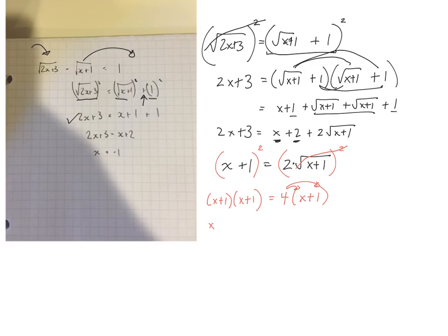All right, so left side, we'll square it, or we'll foil it. So it'd be x squared plus 1x plus another x, so that's plus 2x, plus 1 times 1 is 1, is equal to 4x plus 4.